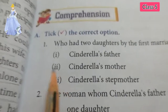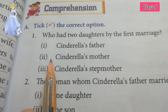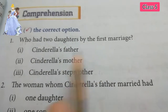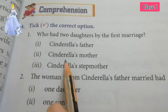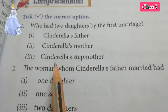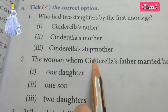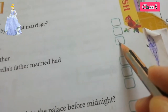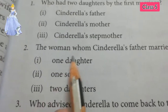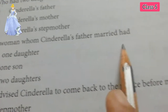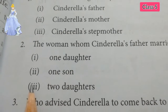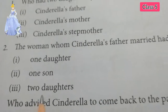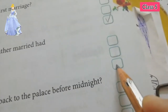Take the correct option. Who had two daughters by the first marriage? Option one: Cinderella's father. Option two: Cinderella's mother. Option three: Cinderella's stepmother. The answer is Cinderella's stepmother — give tick mark. The woman whom Cinderella's father married had two daughters — give tick mark.